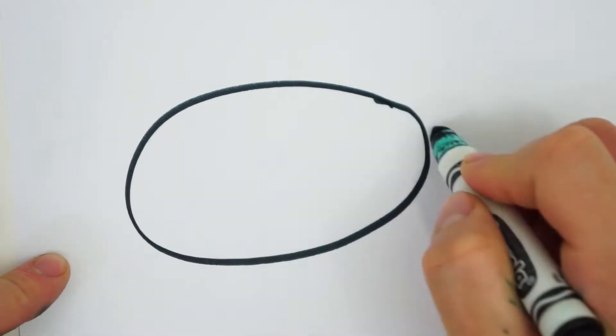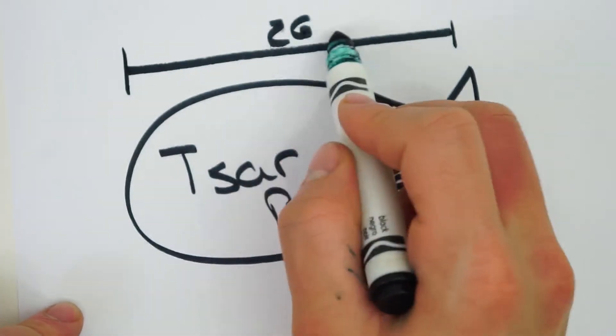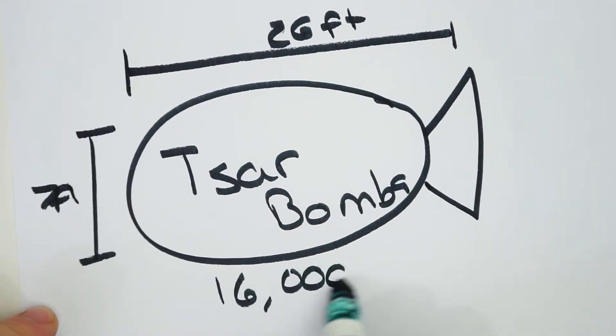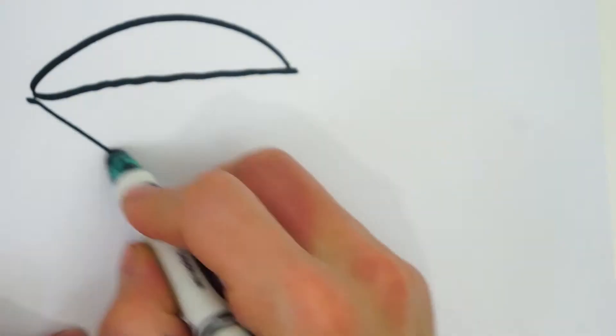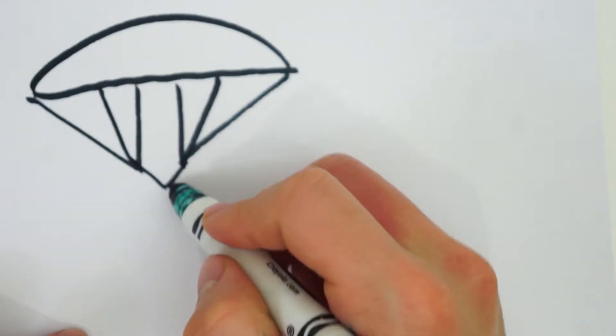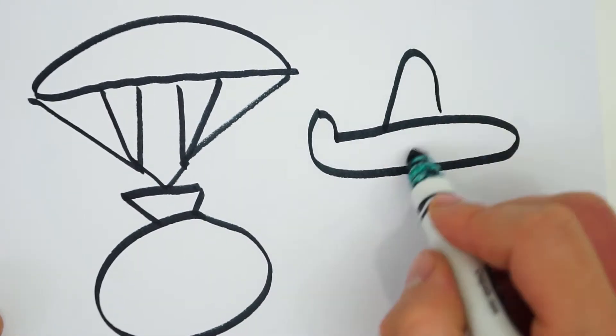Known today as the Tsar Bomba, the Russians constructed a 60,000 pound, 26 foot long, 7 foot diameter superweapon. The bomb was so large that the bomber plane had to be modified to fit it, and a massive parachute had to be fixed to the weapon so when dropped, the plane had enough time to reach a safe distance.